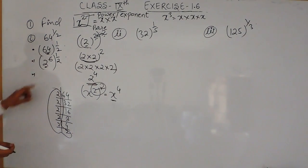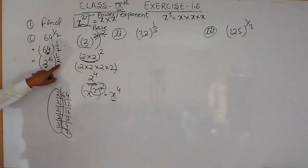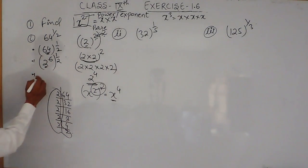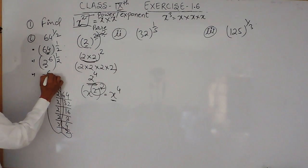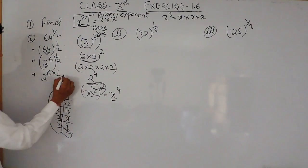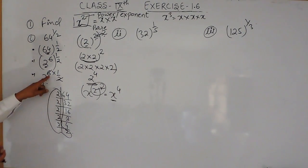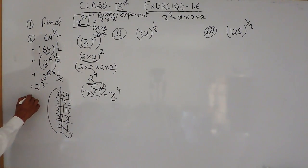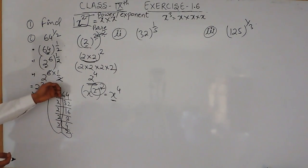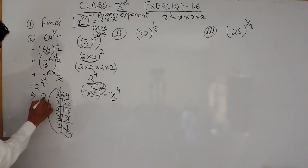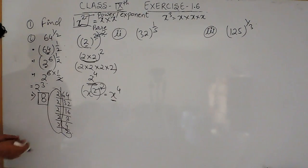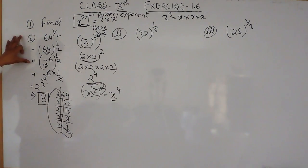Now we know that if some number has a power raised to another power, the powers get multiplied. So you have to multiply the powers: 6 multiplied by 1 by 2. That will be 2 raised to power 3, since 6 divided by 2 equals 3. So 2 raised to power 3 means 2 multiplied by 2 multiplied by 2, which equals 8. This will be the answer for the first question.